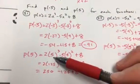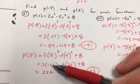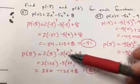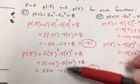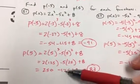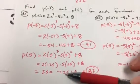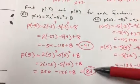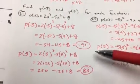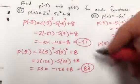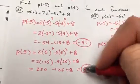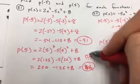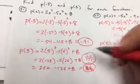Plug 5 in for x: 5 cubed is 125, double it to get 250. 5 squared is 25, multiplied by negative 5 gives you subtracting 125. Add 8 and you get 133.